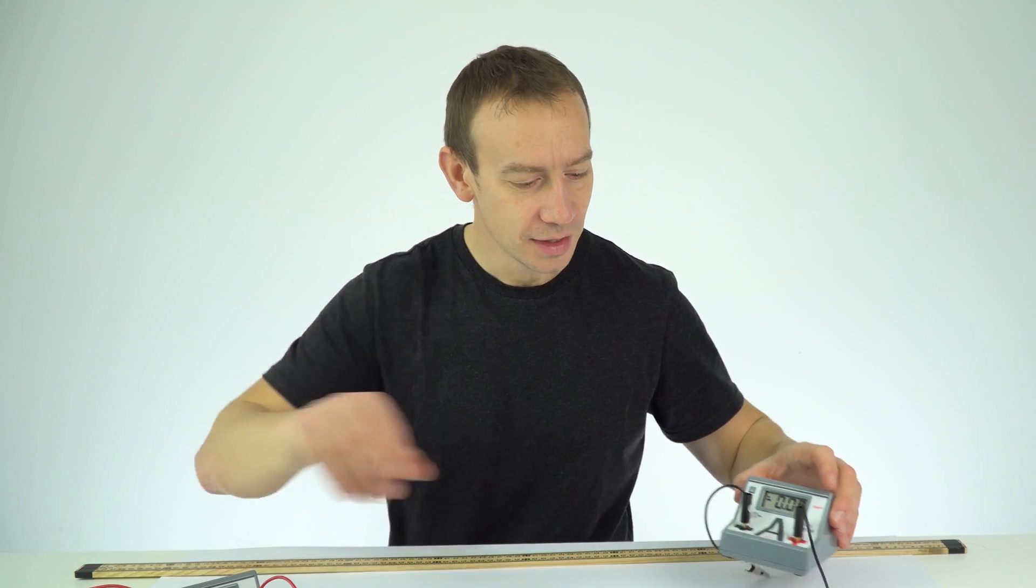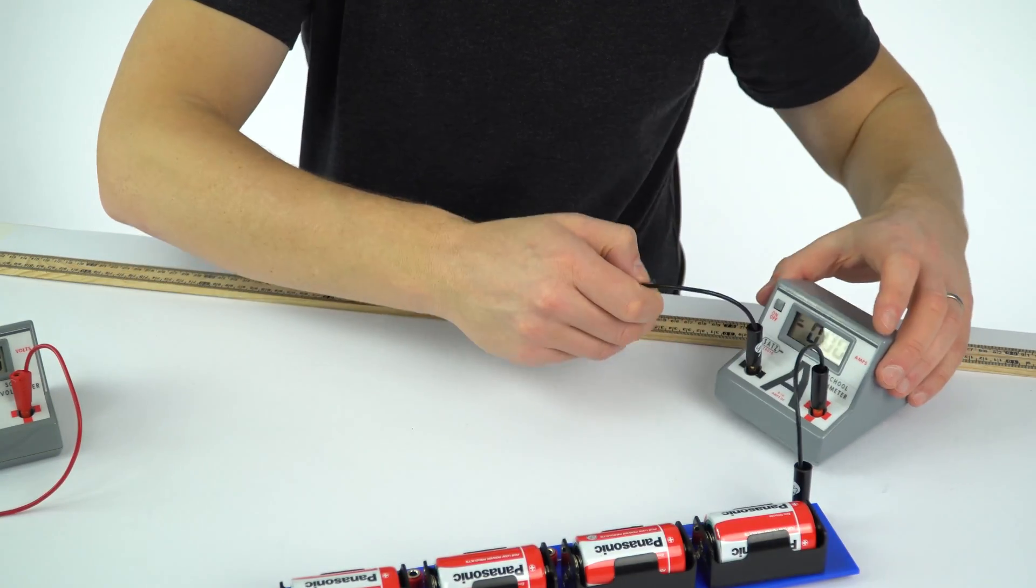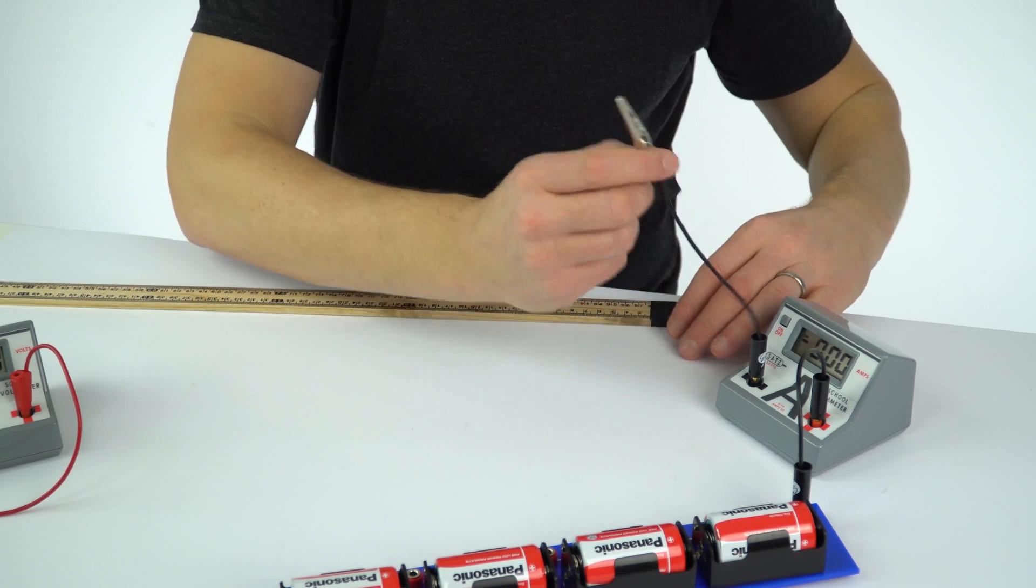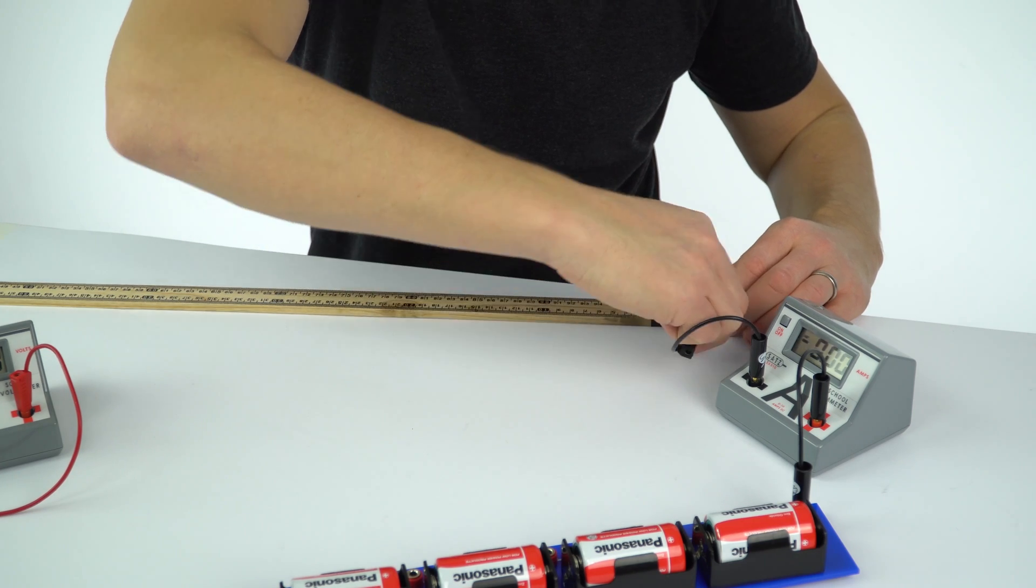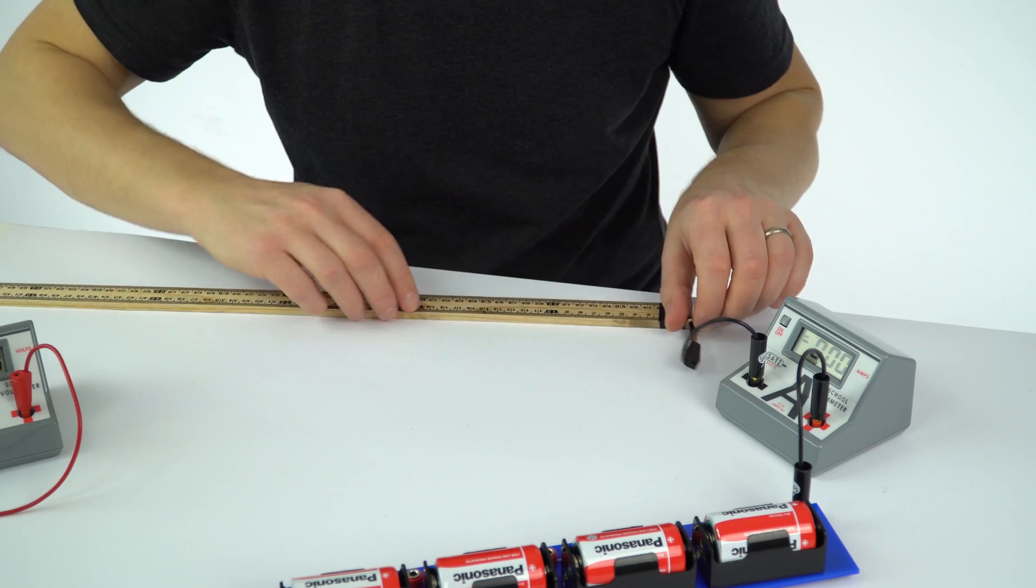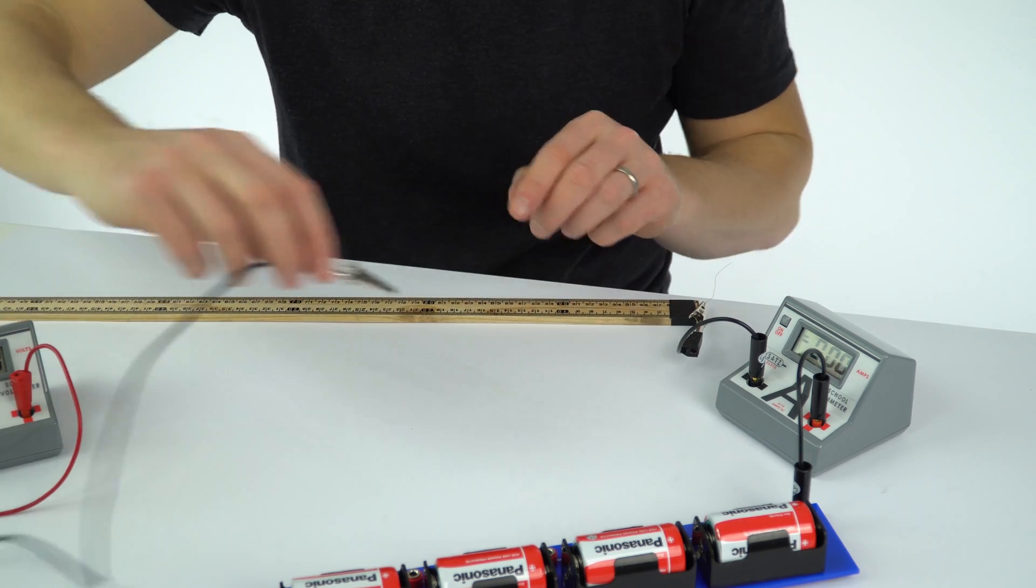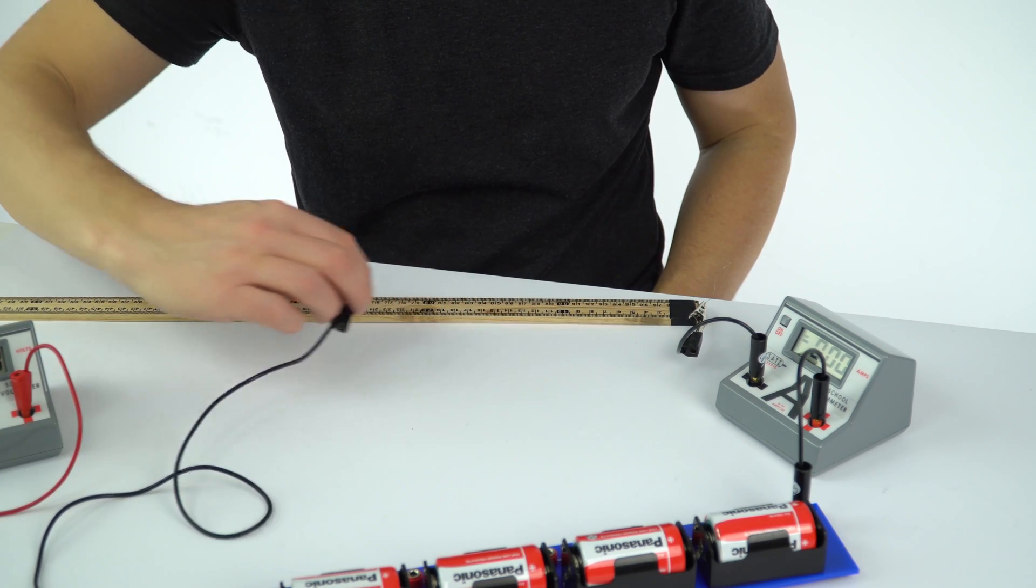So the first thing I'm going to do is just set up a very simple circuit. So I've got my ammeter in series and I've got my wire here. I've just got a crocodile clip which I'm going to put at the end and I'm going to try and make sure I have it as close to zero as possible. Okay so that's the start of my circuit and we can see as we have another crocodile clip we can attach it at different lengths along the wire.